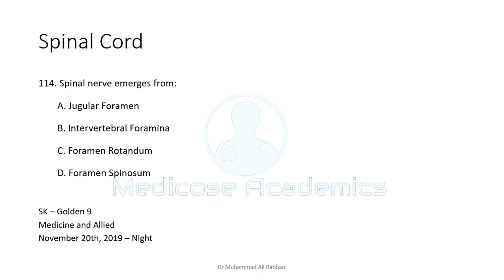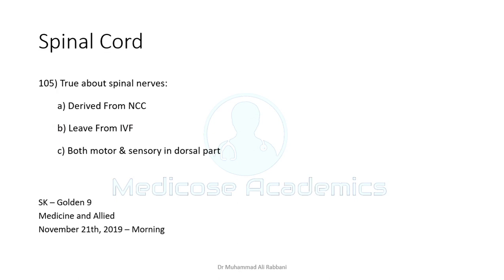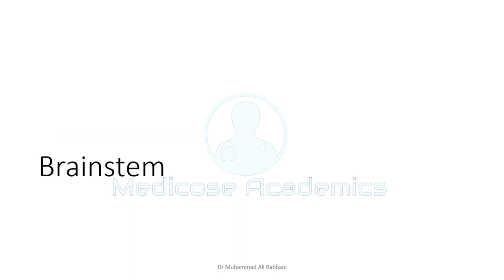The spinal nerve emerges from the intervertebral foramen — the foramen present on either side of the vertebral column between two adjacent vertebrae. This simple fact has been asked multiple times in various forms: 'spinal nerves leave from the intervertebral foramen.'